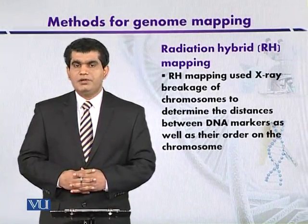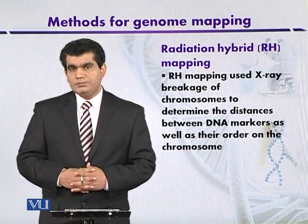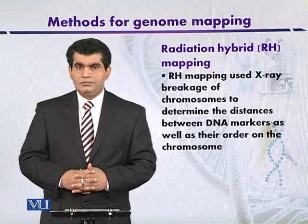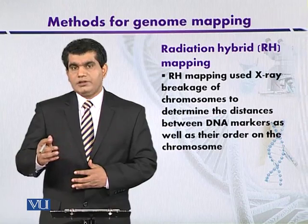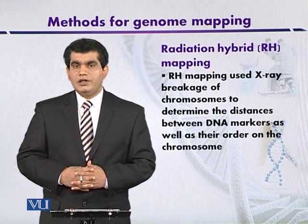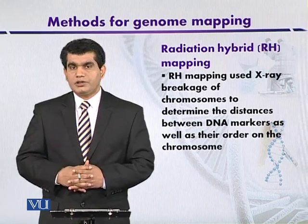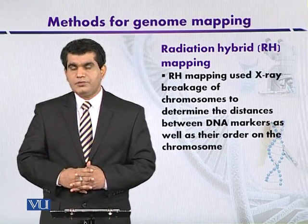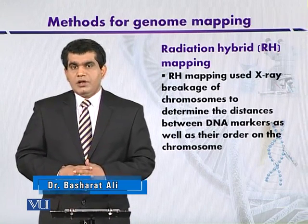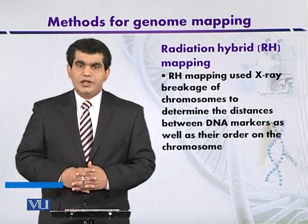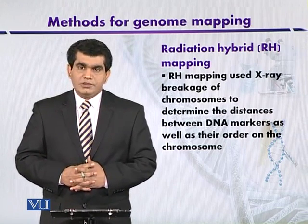Radiation Hybrid Mapping, or RH Mapping, is a technique used for the mapping of mammalian DNA like the human genome. X-rays are used to cause fragmentation of the target DNA. When mammalian cells like human cells are exposed to X-rays, depending upon the dose, it can cause fragmentation of the genomic DNA. This fragmentation pattern can be detected to analyze the distance between genes and their locations on the chromosome.